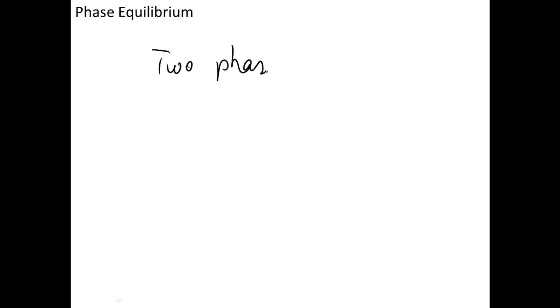The fourth is phase equilibrium. If a system involves two phases, then phase equilibrium is also to be considered. I will give you more information about phase equilibrium later in another topic, as it is a little difficult and I will spend more time on it.